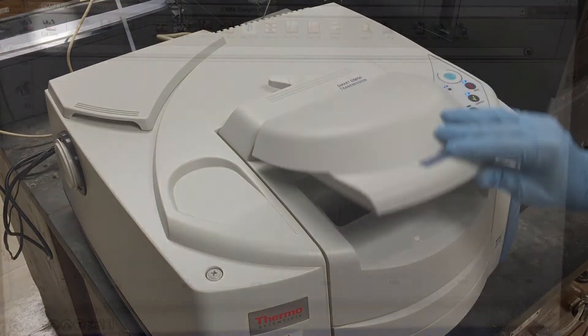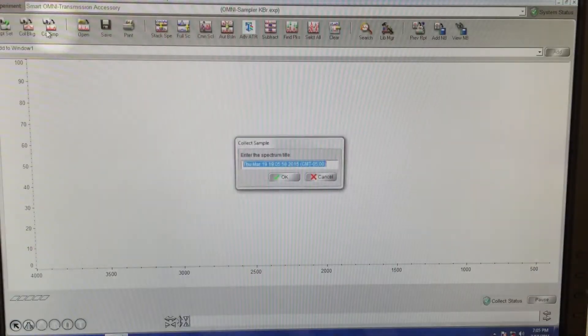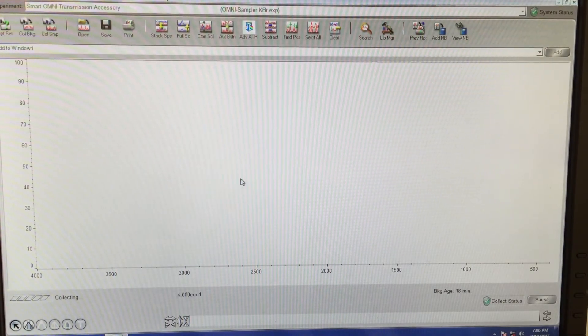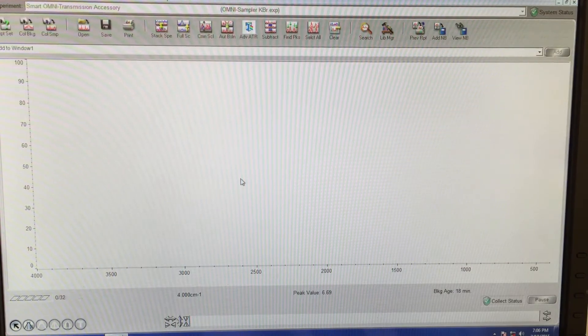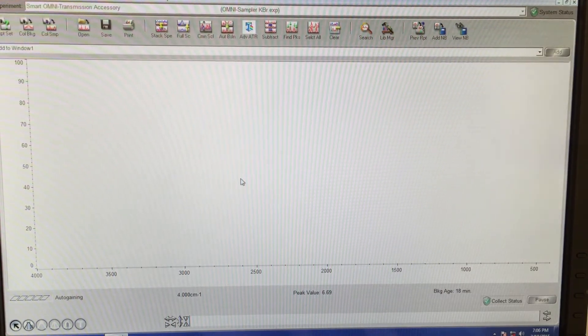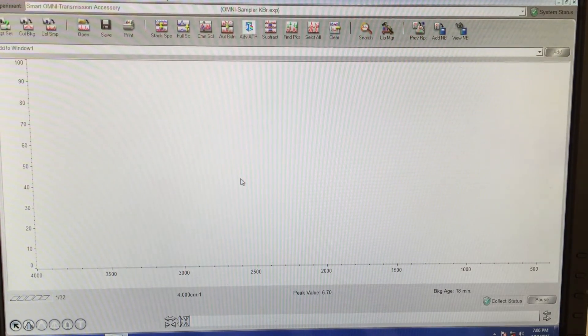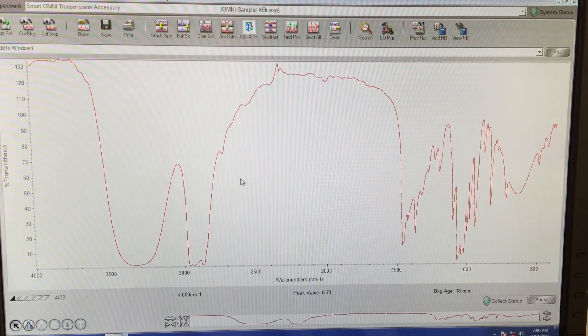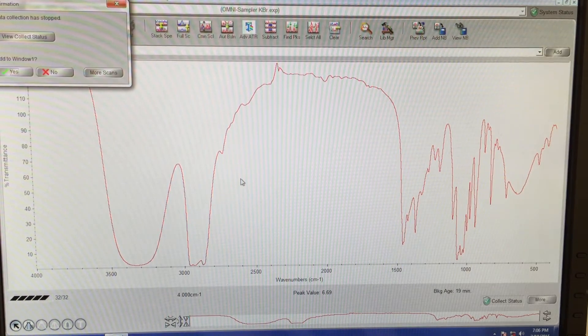In OMNIC, click Collect Sample. When the scan is complete, a dialog box will appear. This time, click Yes to keep the spectrum in the window.